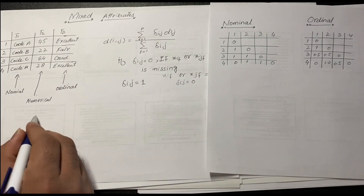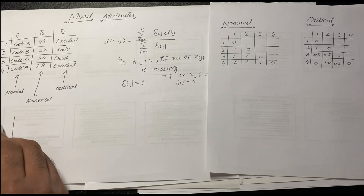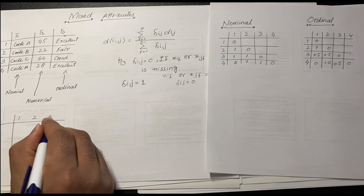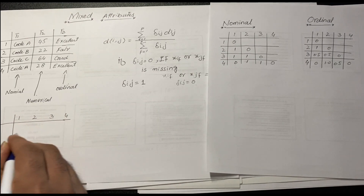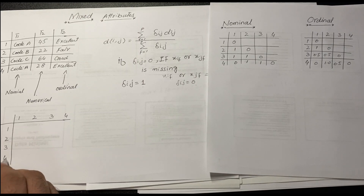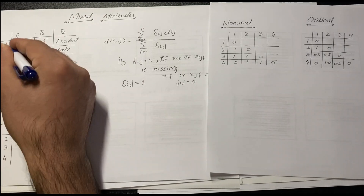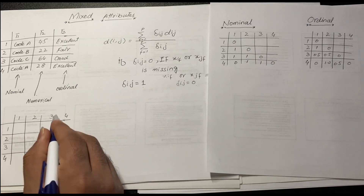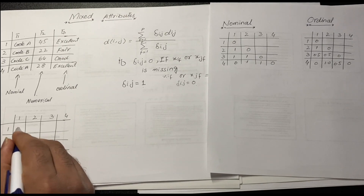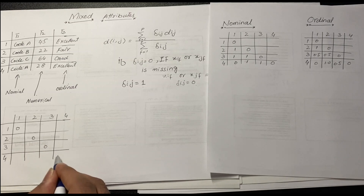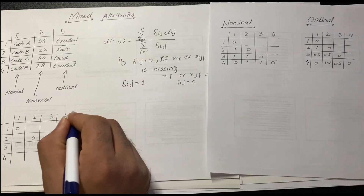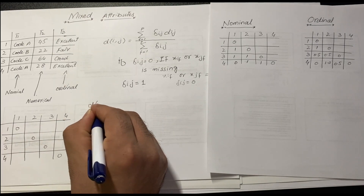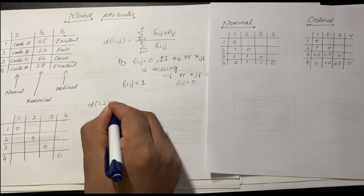Now we just have to combine those values using this formula. I will create the final dissimilarity matrix — a four by four matrix since we have four data objects. The diagonal will always be zero.